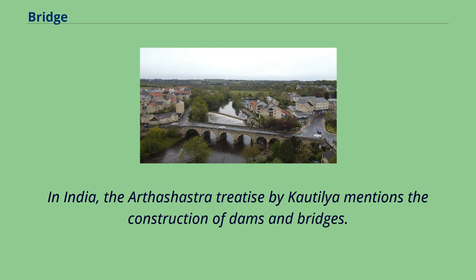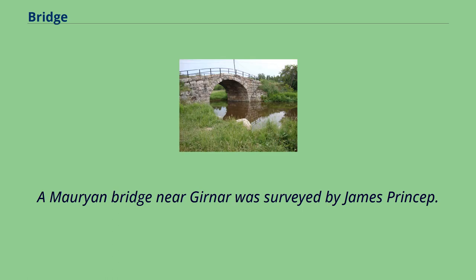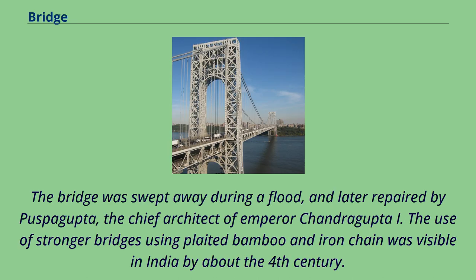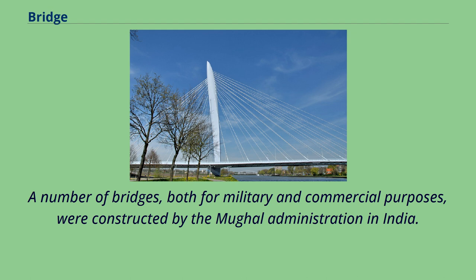In India, the Arthashastra treatise by Kautilya mentions the construction of dams and bridges. A Mauryan bridge near Gurnar was surveyed by James Princep. The bridge was swept away during a flood and later repaired by Puspagupta, the chief architect of Emperor Chandragupta I. The use of stronger bridges using plated bamboo and iron chain was visible in India by about the 4th century. A number of bridges, both for military and commercial purposes, were constructed by the Mughal administration in India.